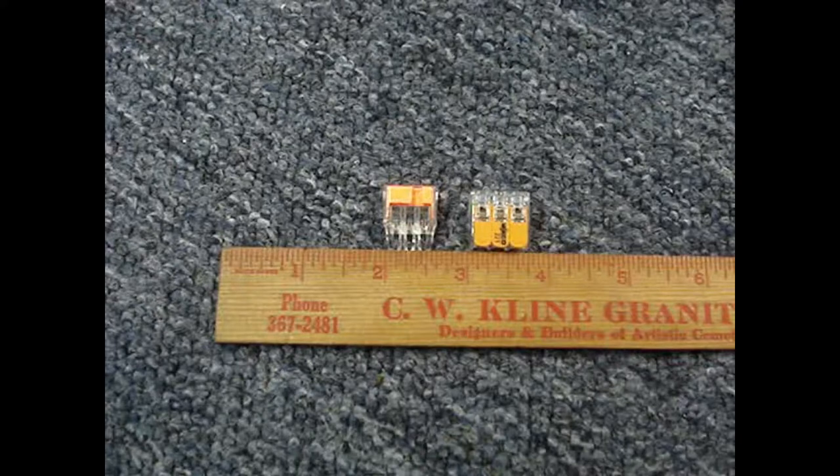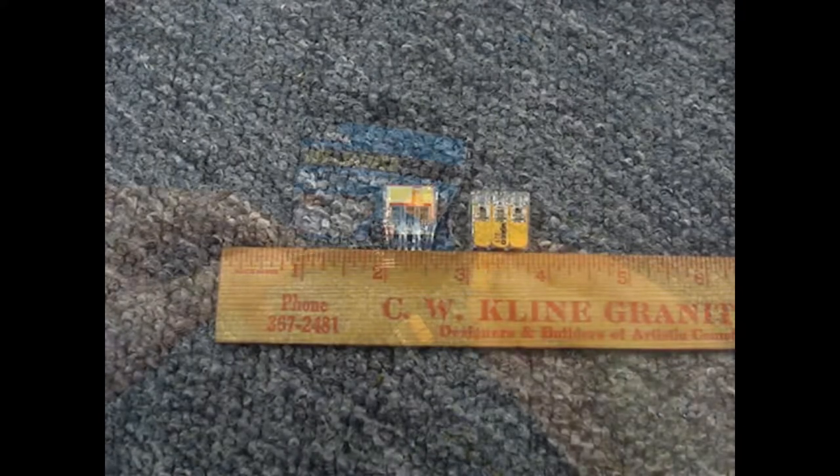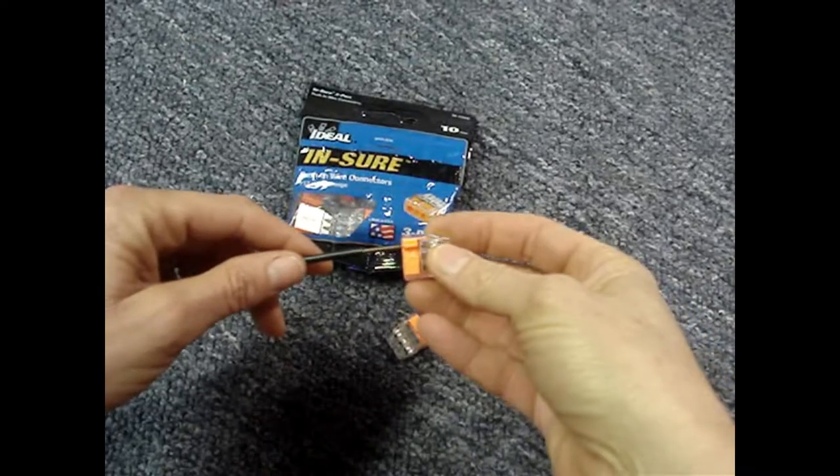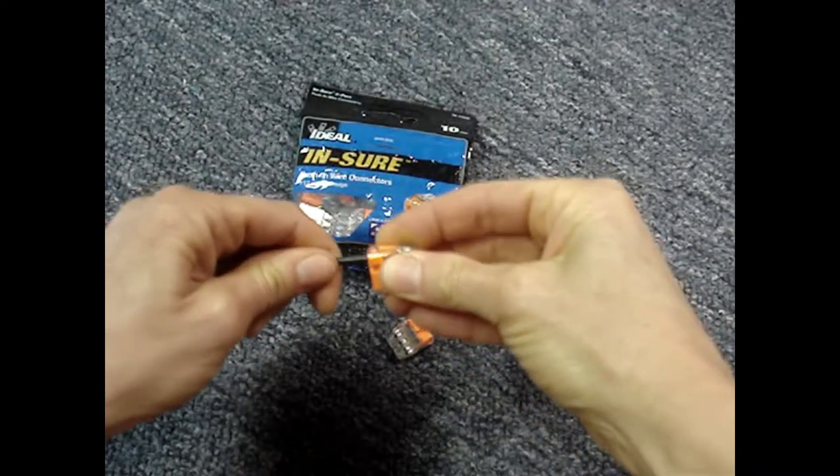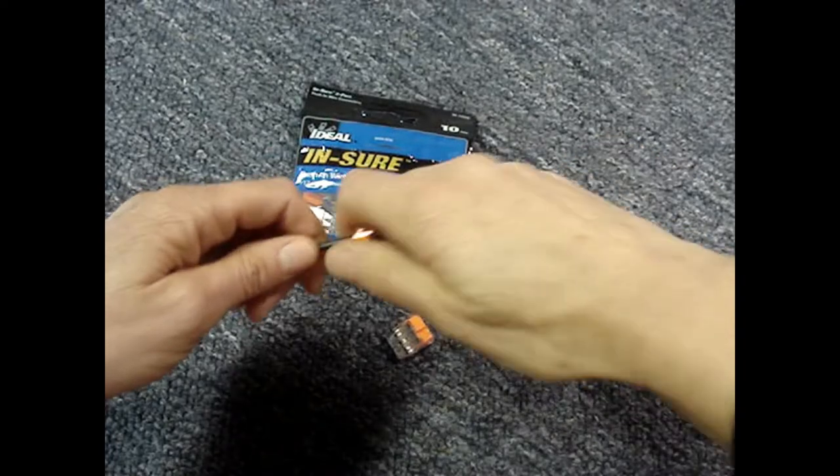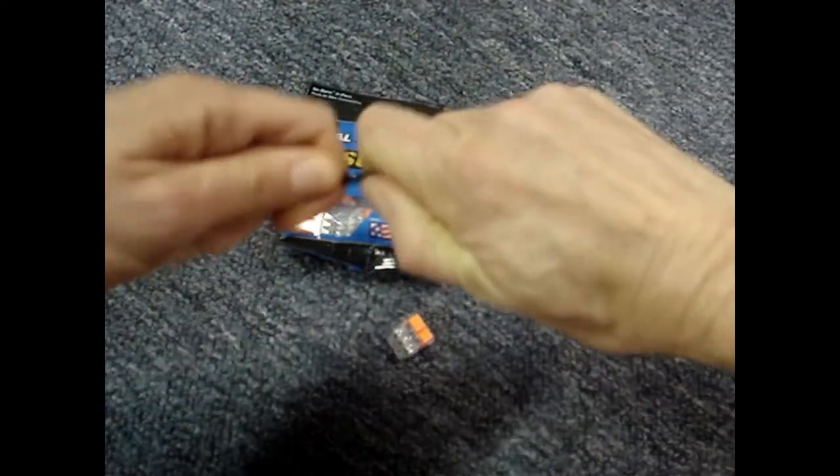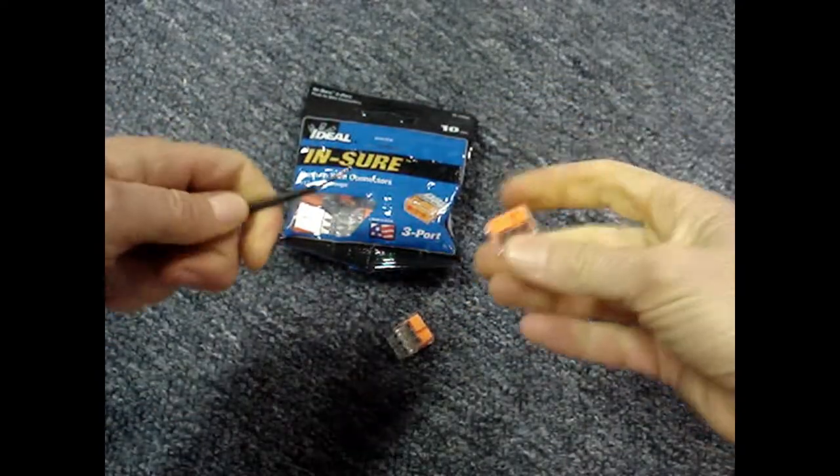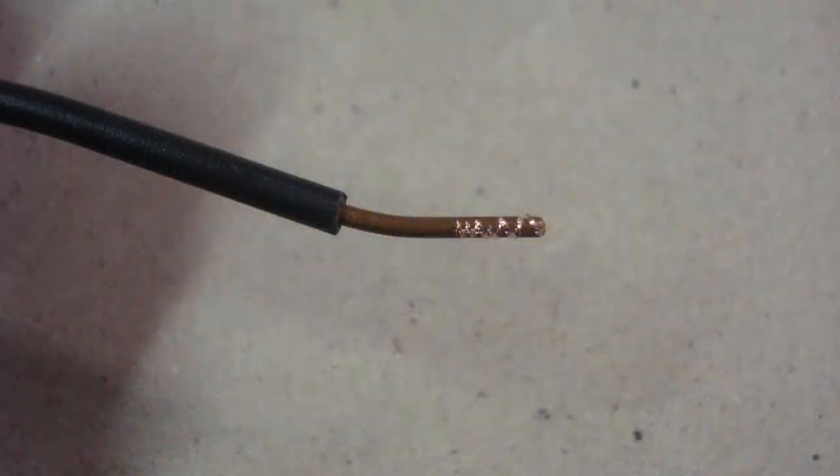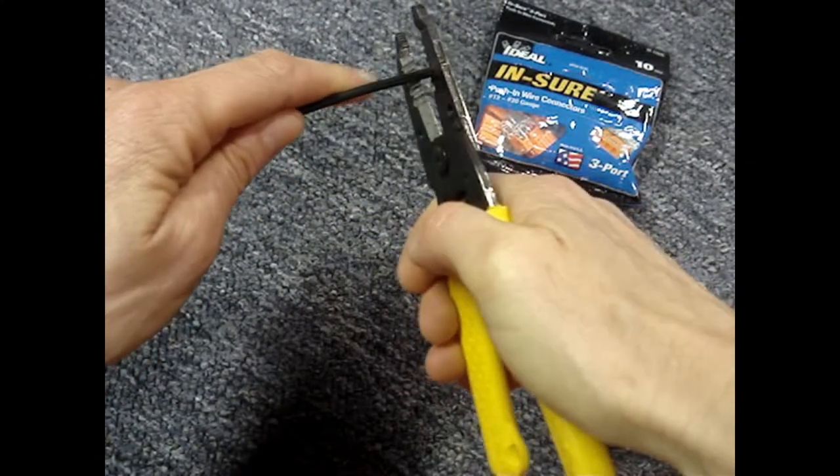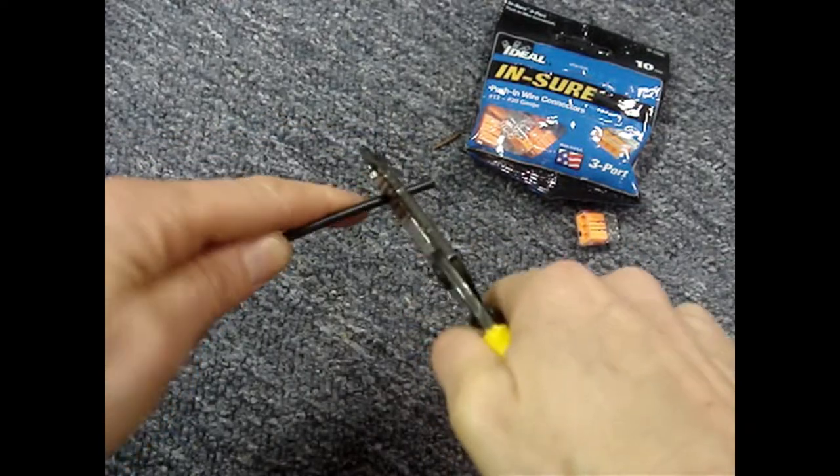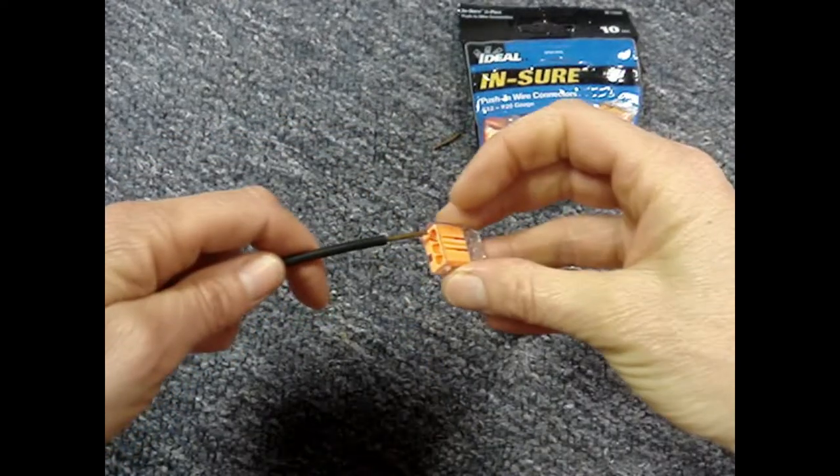There are push-in style connectors that take up about the same amount of space as the WAGOs. You can reuse this ideal brand connector. However, the wires are removed by pulling them out of the connector. There's a risk of damaging the wire's covering. It mars the copper and you have to cut the wire back and re-strip it to remake the splice, making the wires even shorter.